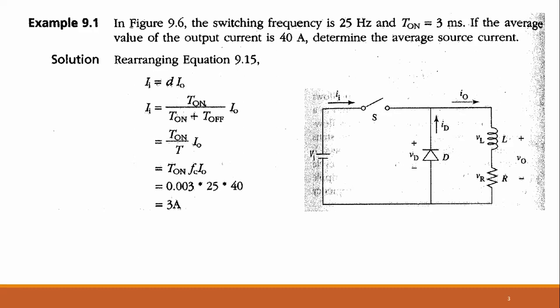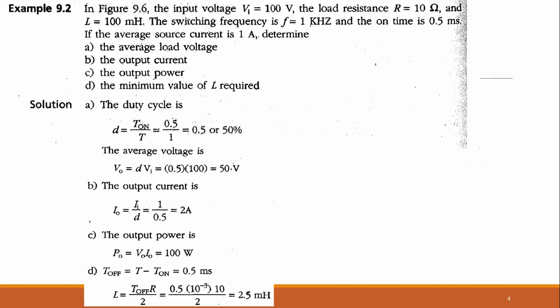Since 1/T equals frequency f_c, we can replace it: input current equals T_on times f_c times I_out. Putting in all values — T_on is 3 milliseconds, switching frequency is 25 Hz, and output current is 40 ampere — we get the input current equal to 3 ampere. So the average source current is 3 ampere.